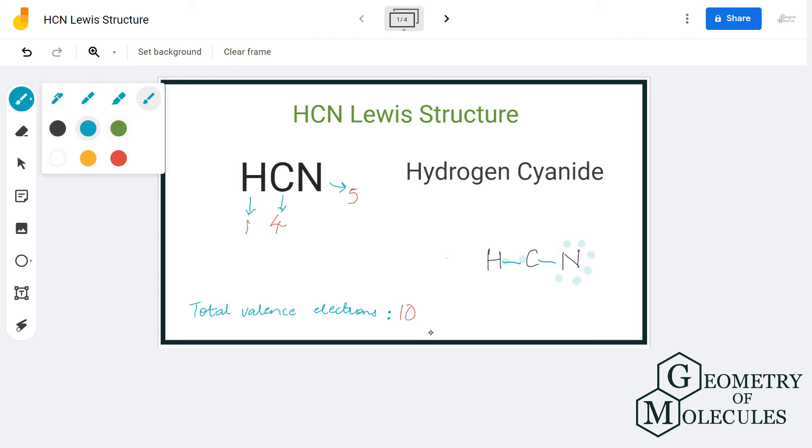But here as you can see the octet of carbon is still incomplete which means it is not a stable structure yet. So what we will do is we will shift these two electrons here and form one more bond between carbon and nitrogen like this.